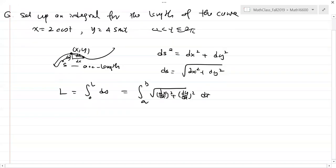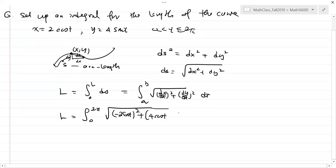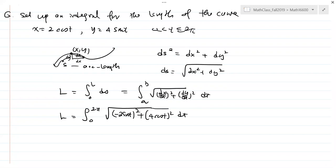For our problem, the interval for t is from 0 to 2π. The derivative of x with respect to t is negative 2 sine t, squared, and 4 cosine t squared, times dt. So that's the integral for the length. You may not be able to evaluate this analytically, so you can use a computer to evaluate the approximate number.